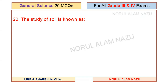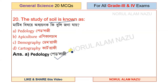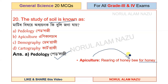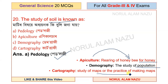Question number 20: The study of soil is known as pedology. Apiculture is the rearing of honeybees for honey. Demography is the study of population. Cartography is the study of maps or the practice of making maps.